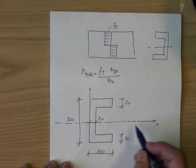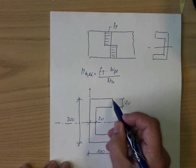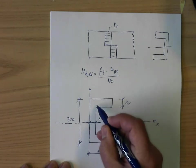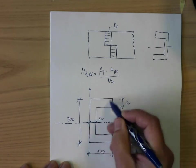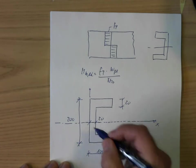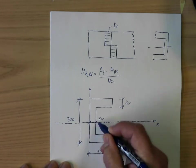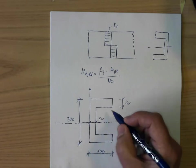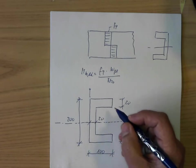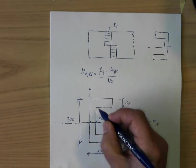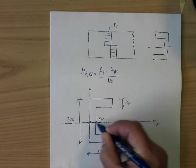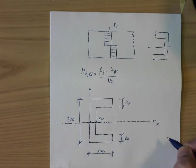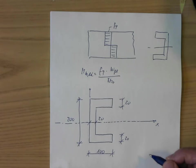Then I have to find the center of gravity of this part of the cross section, which is the same in this direction. And then we have to calculate the first area moment of inertia, which means area times the distance of this center of gravity to the axis of interest. We have this two times, and then we get the plastic section modulus.